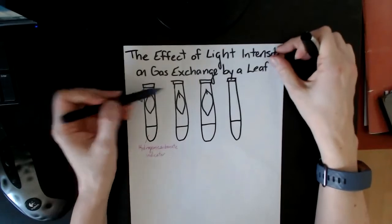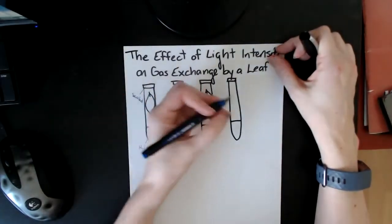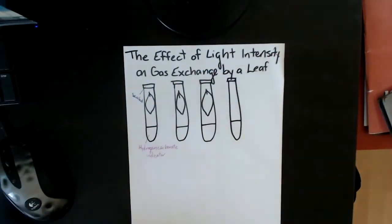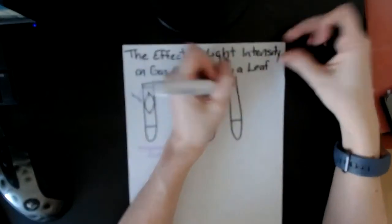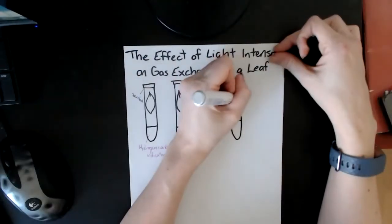So there are my other test tubes. Three of them have leaves in them and the fourth one doesn't have anything. They're all sealed. This one here is acting as a control because it has no leaf in it, so there's obviously going to be no gas exchange. So this is your control tube.